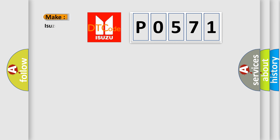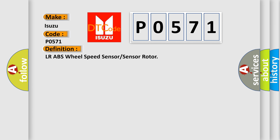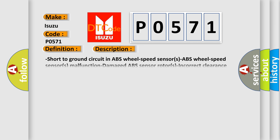So, what does the diagnostic trouble code P0571 interpret specifically for Isuzu car manufacturers? The basic definition is: LR ABS wheel speed sensor or sensor rotor. This is a short description of this DTC code: short to ground circuit in ABS wheel speed sensors, ABS wheel speed sensors malfunction, damaged ABS sensor rotors, or incorrect clearance between the ABS sensor and sensor rotor.